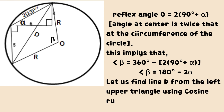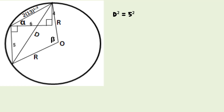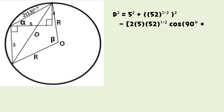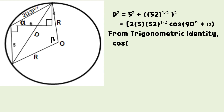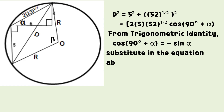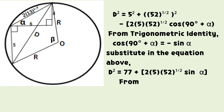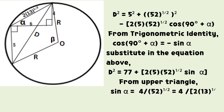Let us find line D from the upper left triangle using the cosine rule. We have an equation in the square of D. From the trigonometric identity, cosine of (90 degrees plus alpha) equals negative sine alpha. Substituting into the equation above, we have a simplified form of the equation for D squared as shown on the screen.